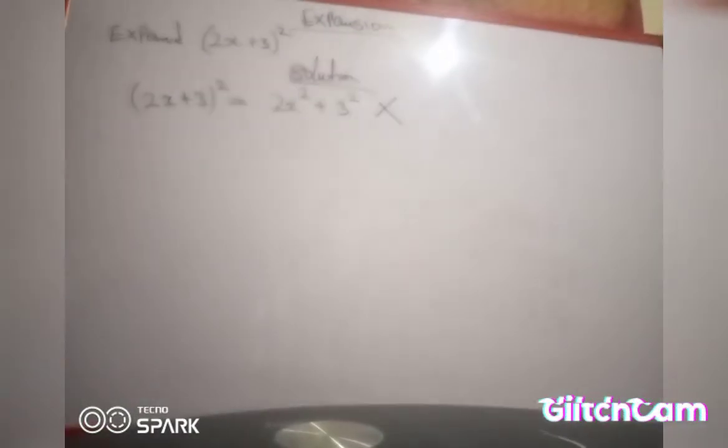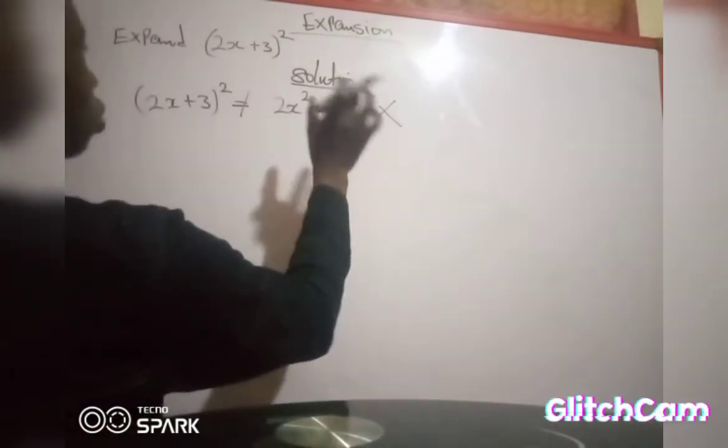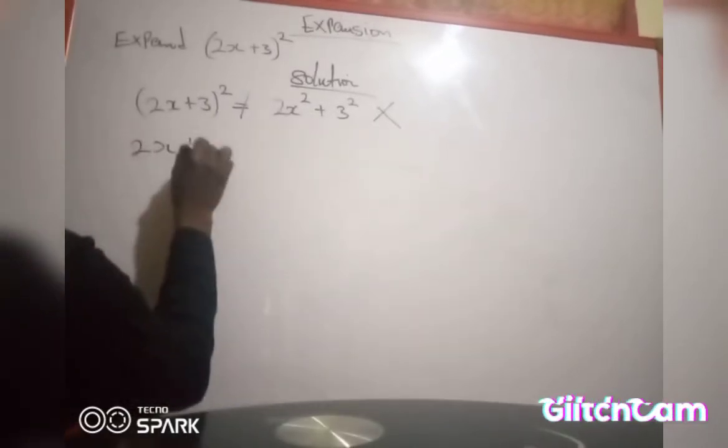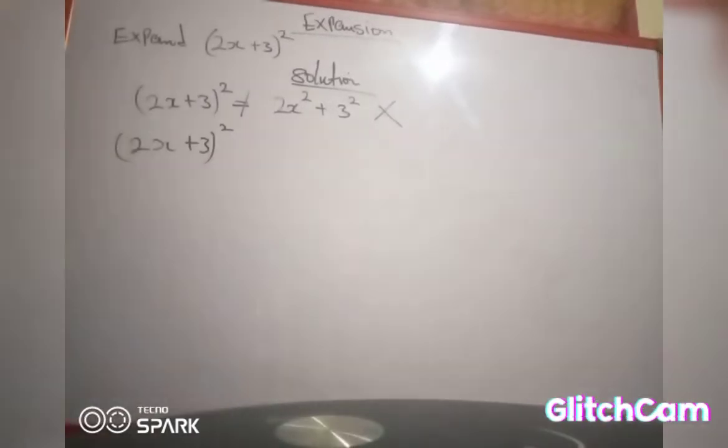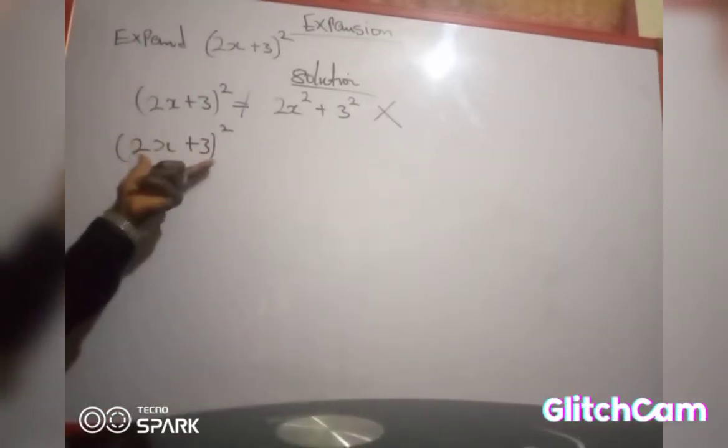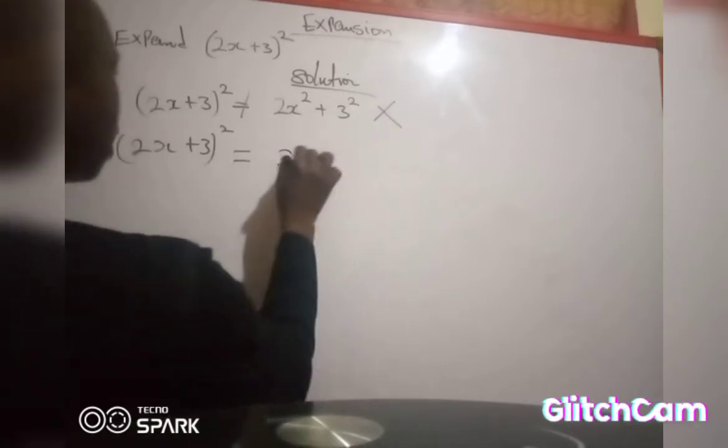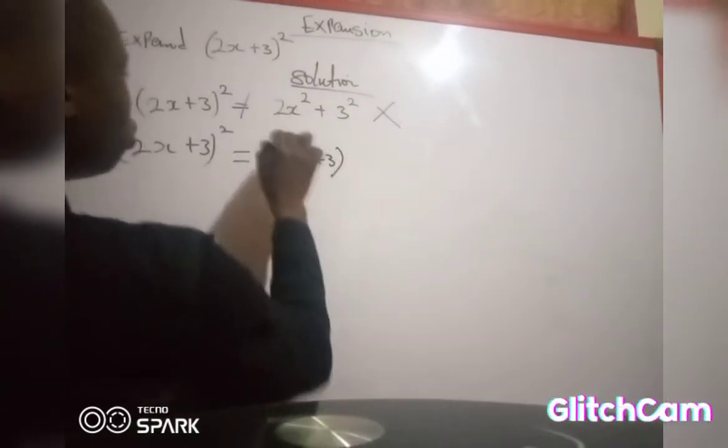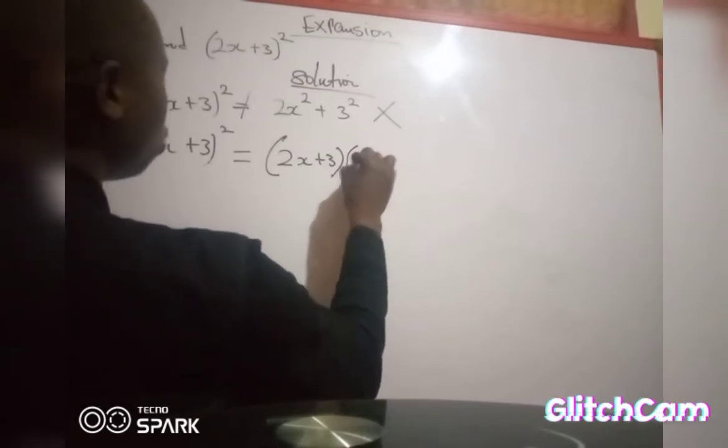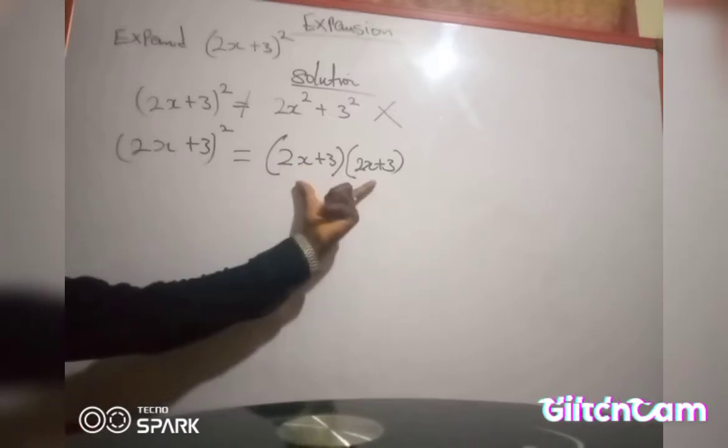So in this lesson I'll teach you how to expand this bracket. This is not equal to this. So (2s + 3) squared, which is the same as you write this bracket into two places, which is equal to (2s + 3) you bracket it then open another bracket (2s + 3). This is equal to this, they are the same, but this is not equal to this.